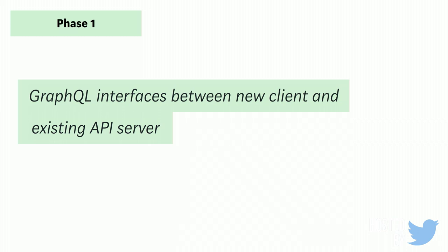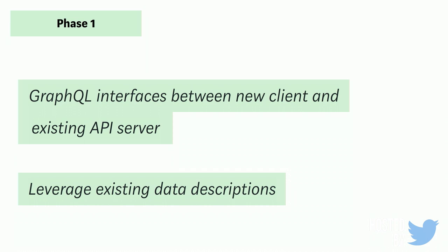In phase one, we want to use GraphQL as an interface between our client and our existing API server. If you don't know what GraphQL is, it's going to allow us to query for all the data we need instead of hitting a REST endpoint and having the data come back in a big blob. We also want to leverage our existing data descriptions — we actually use protobufs right now, not as a protocol buffer but as a schema. So we want to be able to use those things. This means we can start migrating our system piecemeal and set ourselves up for performance benefits in phase two.